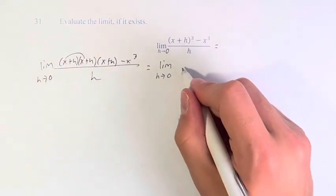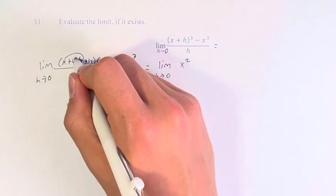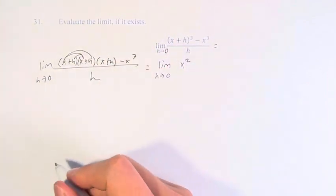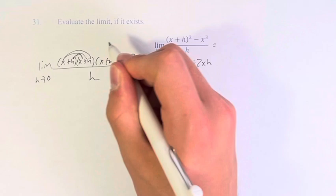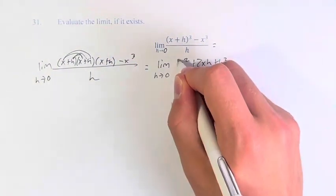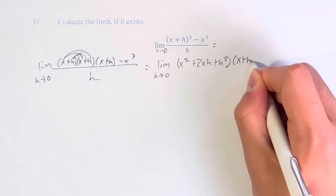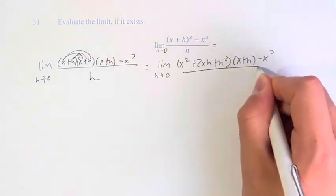So we have x times x is x² plus x times h plus another x times h is plus 2xh, plus h² times (x + h) - x³ over h.